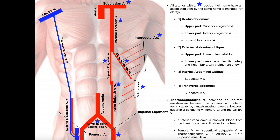We also have a superficial epigastric vein, shown in blue. As we go from the femoral vein, we move up to the superficial epigastric vein. There's going to be another vein here called the thoracoepigastric vein, which has some clinical implications. It actually connects the superficial epigastric vein to the axillary vein. The axillary vein delivers blood to the subclavian vein, then to the brachiocephalic vein, then the superior vena cava, which brings it back to the right atrium.